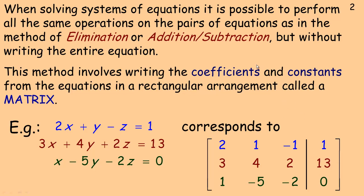When solving a system of equations, it's possible to perform all the same operations as the algebraic method. Some people call it elimination, some people call it addition and subtraction. Algebraically, if I had two equations and wanted to eliminate x, I could multiply one by 3 to make it 6x and the other by 2 to make it 6x, and subtract them to eliminate x. Addition and subtraction is just a different name for the same thing.